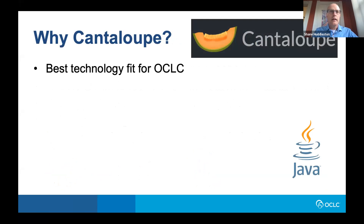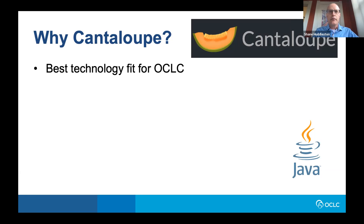So we settled on Cantaloupe. Cantaloupe is an image server that handles generation of image tiles and zoom levels from high-resolution originals — that's what we needed. For us, Cantaloupe was the best technology match. It's implemented in Java, and we're mostly a Java shop. It works well in a multi-tenant environment, and it has robust support for JPEG 2000.